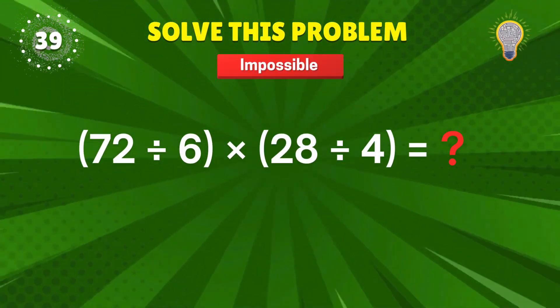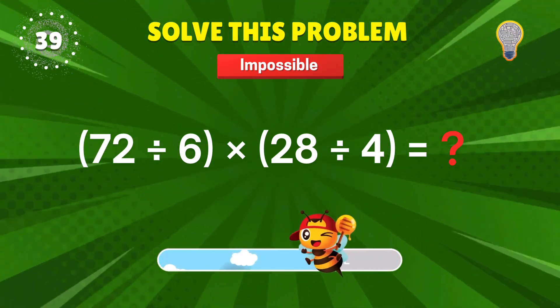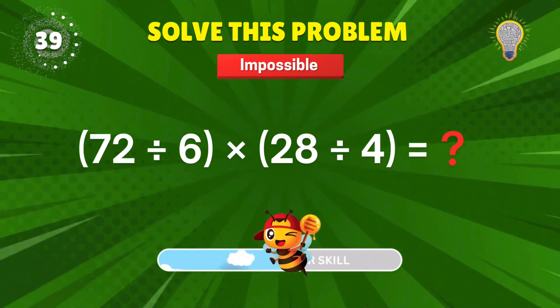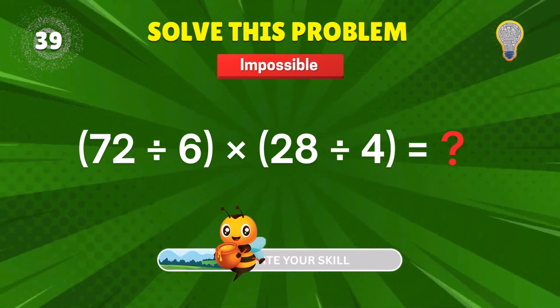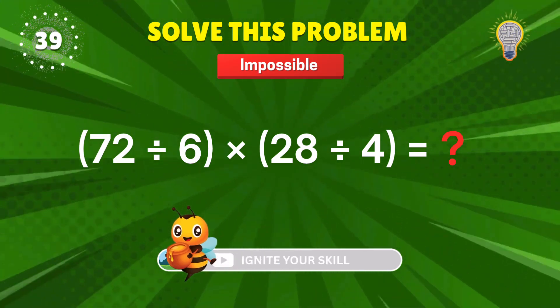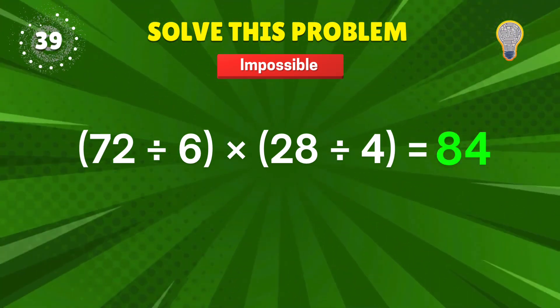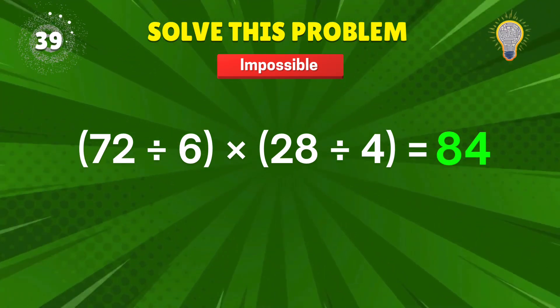72 divided by 6? Times 28 divided by 4? Double divide, then multiply. 84. Precision play. Plus 1 point.